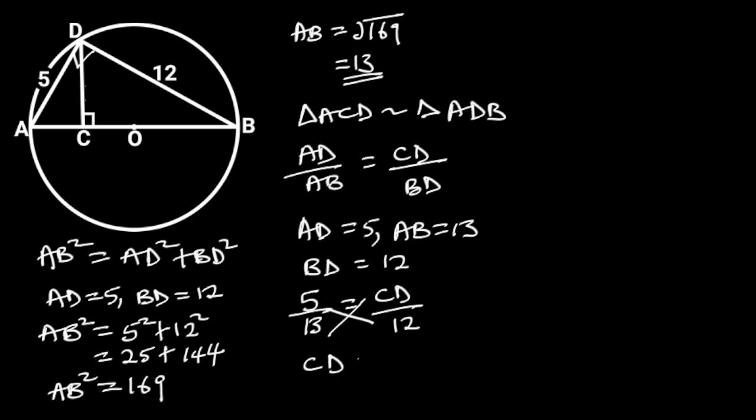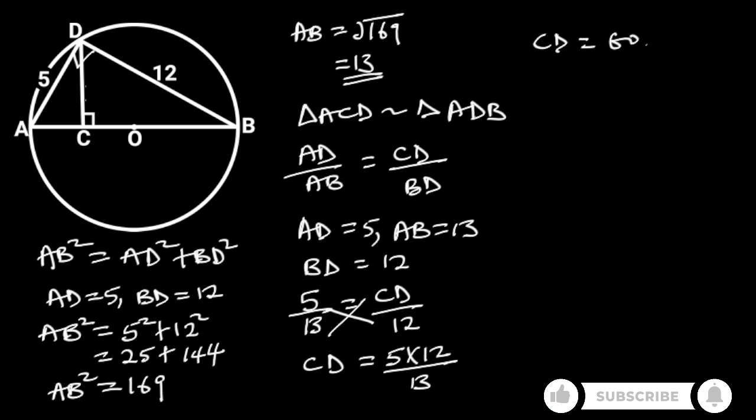CD will be equal to 5 times 12 over 13. 5 times 12 is equal to 60. Hence, CD is equal to 60 over 13.